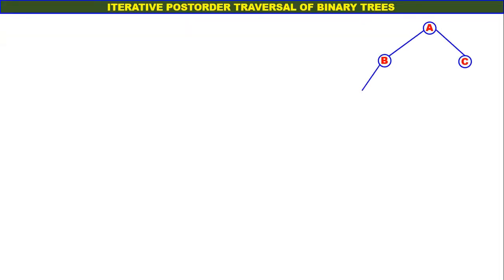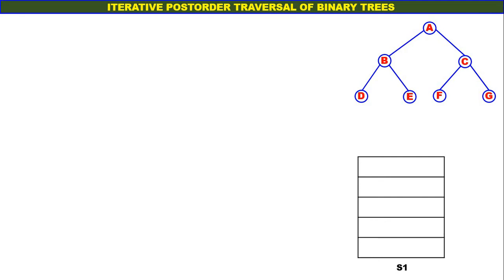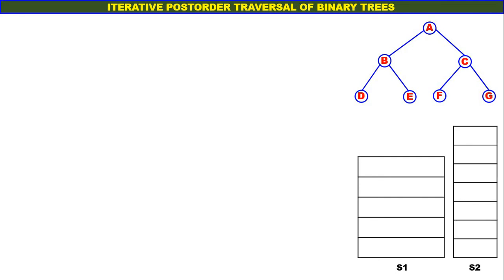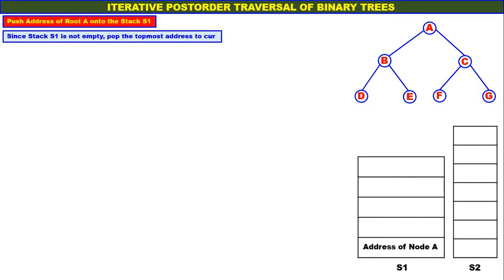Let us consider a slightly bigger tree. A is the root of the tree and these are our two stacks S1 and S2. Push address of root A onto stack S1. Address of root A is pushed onto stack S1. Since stack S1 is not empty, pop the topmost address to CUR — pop address of node A and assign it to CUR.